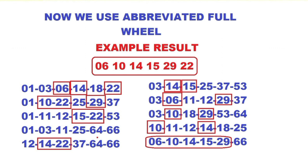By using only 10 combinations and 16 occupied numbers, we have a powerful strategy for winning a jackpot price and most of the consolation prices. Hope you understand this strategy — apply it based on your previous results. Good luck guys! Don't forget to like, share, and subscribe to this channel, and hit that bell button to get daily updates.